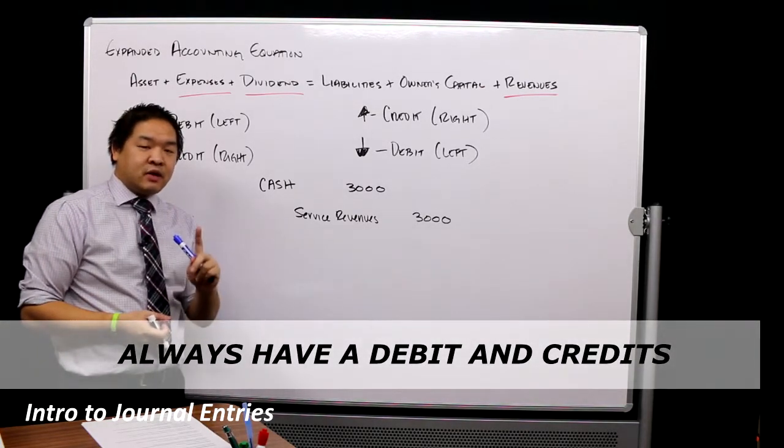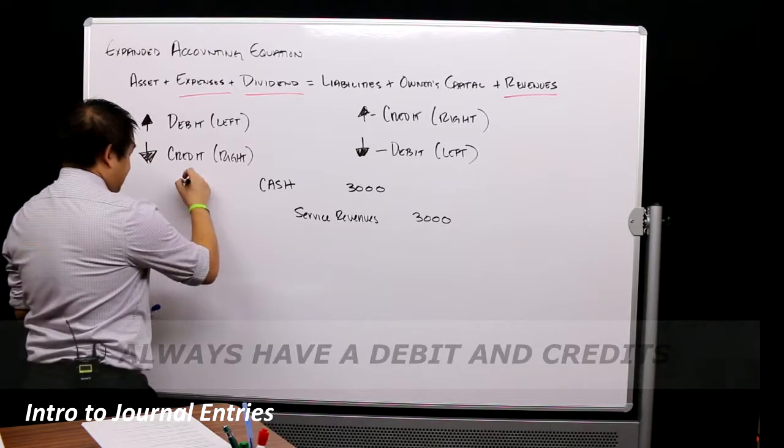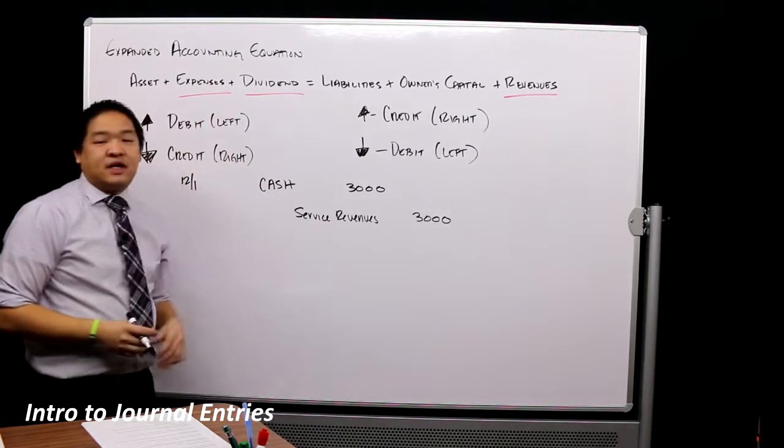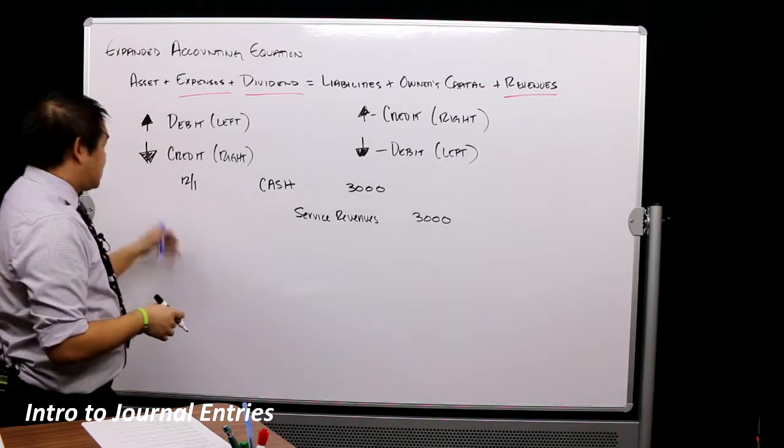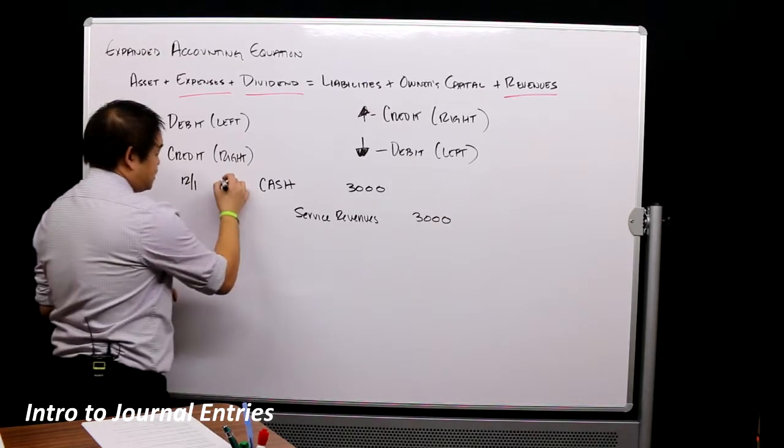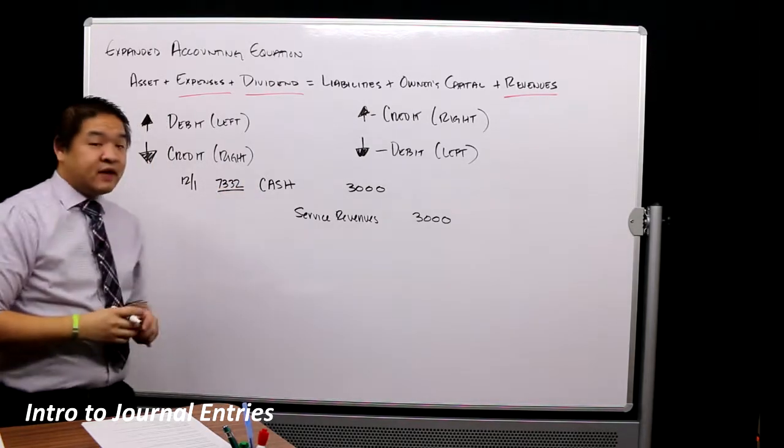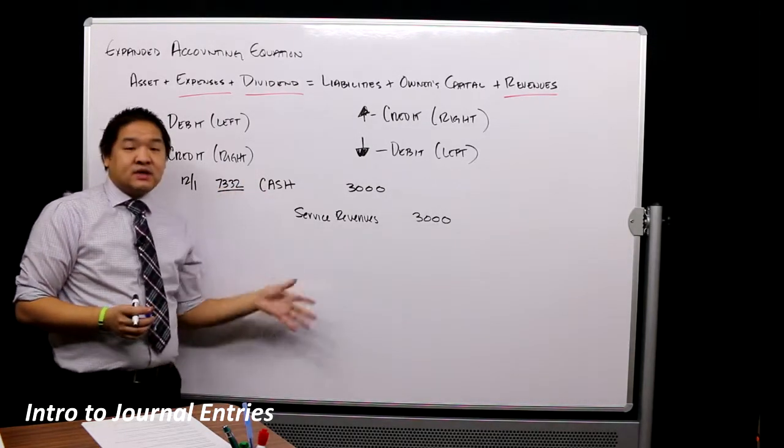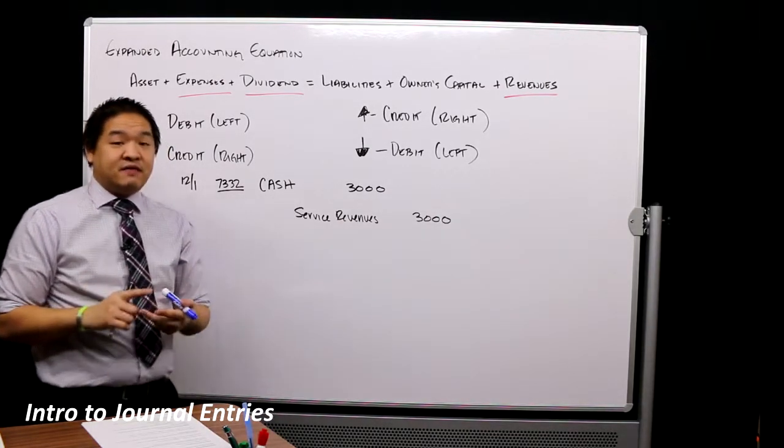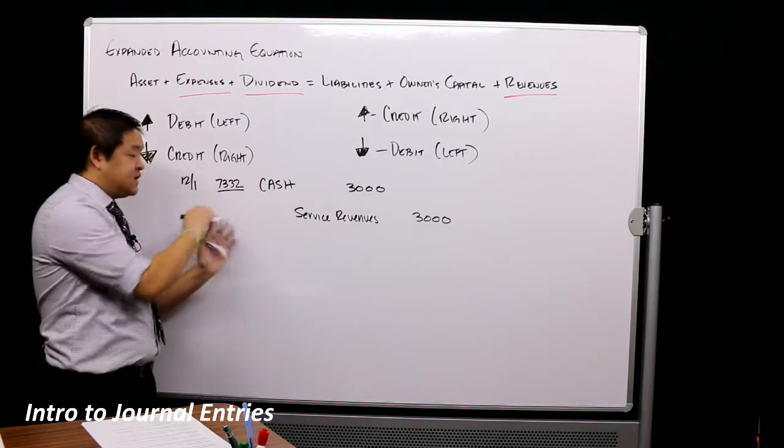So number one, always have a debit and credit. Now I like to teach my students kind of the full journal entry. So we always have a date. We'll say that's 12-1. Typically at the top of the sheet you'd have 2,000 in XX. So 12-1. Typically we have a journal entry number. So this may be journal entry number 7332. A lot of accounting softwares now will number every single journal entry. So let's say you're looking up at a journal entry, you know that the journal entry is number 7774. You put that in the computer and it'll bring up the journal entry. So that's what that identifying number is.